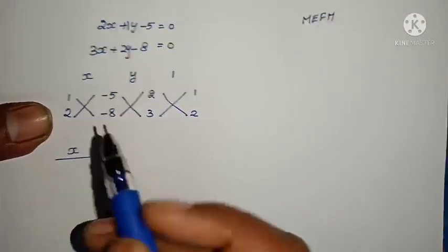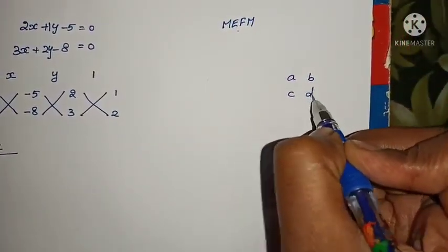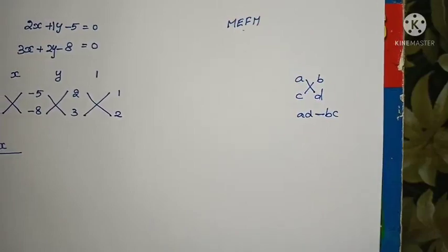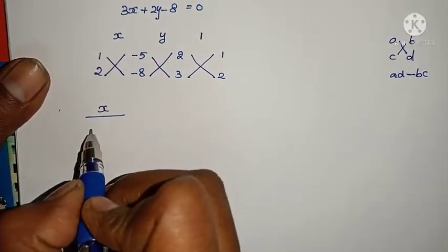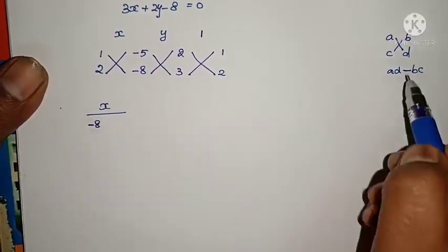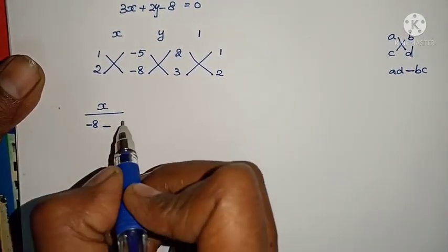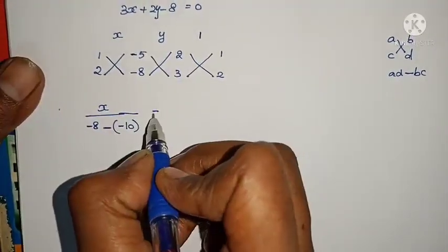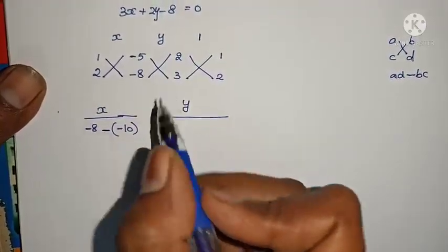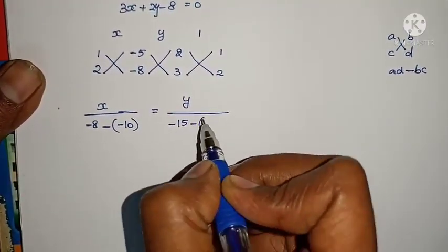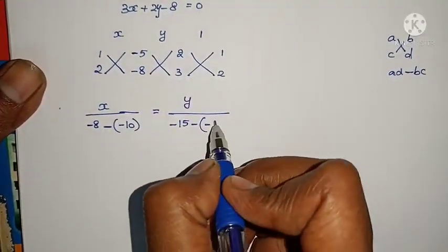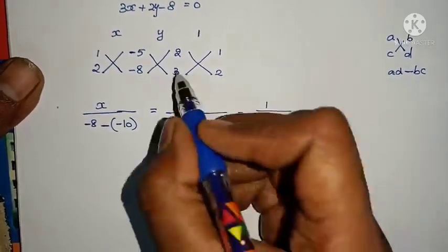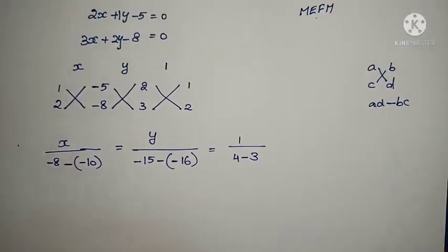For cross multiplication, in the form of a, b, c, d — the result is ad minus bc. So x by: (1 times minus 8) minus (minus 5 times 2) = minus 8 minus (minus 10) = minus 8 plus 10 = 2. Equals y by: (minus 5 times 3) minus (minus 8 times 1) = minus 15 plus 16 = 1. Equals 1 by: (2 times 2) minus (3 times 1) = 4 minus 3 = 1. Very easy.